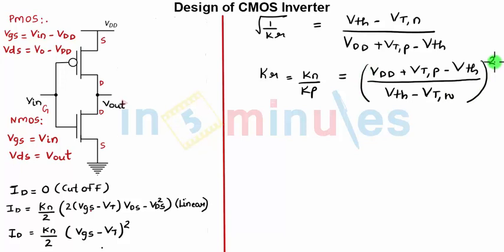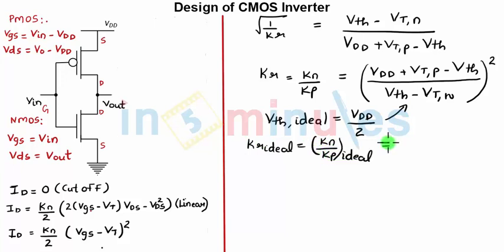Now recall what we have discussed in the previous clip that switching threshold ideally should be VDD by 2. So let's substitute this in this equation and see what happens. So KR ideal is equal to KN by KP ideal equal to (0.5 VDD plus VTP) upon (0.5 VDD minus VTN), this is the whole square.